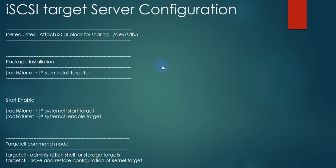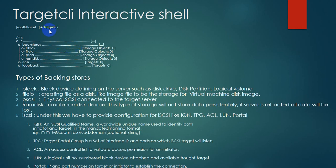For server configuration, the prerequisites are to have a partition or block device ready to share. After installing the targetcli package, start and enable the target service. Then fire the command 'targetcli' to enter the interactive target shell. Inside the shell, typing 'ls' shows the disk table with backstores information — the storage configuration of the target server.